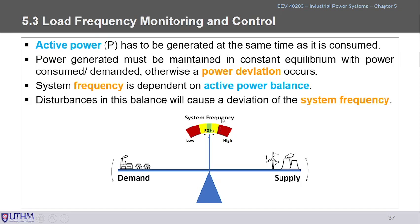There are two types of frequency tolerance. The statutory tolerance is ±1%, and the operating tolerance is half of that — ±0.5%.